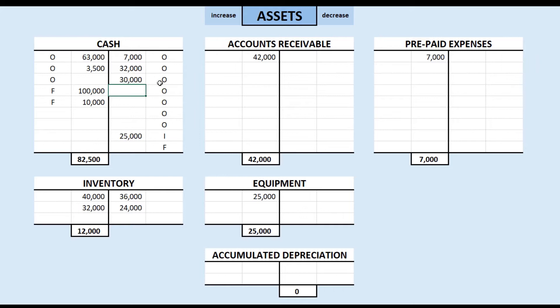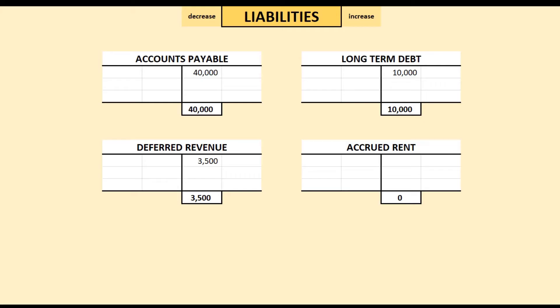Where would the left side entry be? Think about what this would change. Originally, we bought $40,000 worth of widgets on credit. We made an entry when we booked that transaction — our credit purchase. We go to liabilities and we see we have accounts payable for $40,000. Now we're paying that off — not all of it, but $30,000. So we are reducing that obligation, reducing that liability. In the liabilities T-accounts, a left side entry is where we decrease our liability. We will reduce that liability by $30,000 and we are done accounting for this transaction.